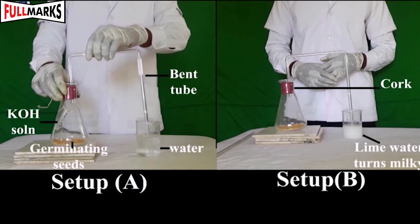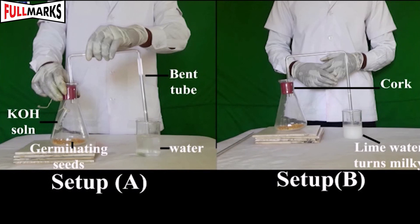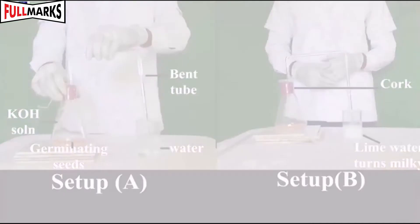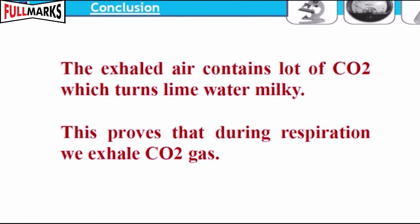The other experiment is to test the release of CO2 by plants during respiration. Apparatus required: test tube, cork, germinating seeds, a bent tube, and freshly prepared lime water. Procedure: Take two test tubes, with one test tube having germinating seeds with a little water sprinkled over it. Fix the mouth of the test tube with a cork in which a bent tube is fixed. Allow the mouth of the bent tube to be immersed in the test tube containing lime water. Record your observations after a few hours. Observation: The freshly prepared lime water turns milky, due to excess CO2 releasing into the test tube during respiration of germinating seeds. Conclusion: This shows that CO2 is given out during respiration.